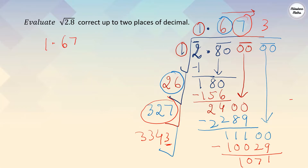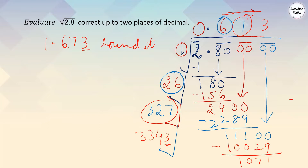We have got 1.673. When asked for the answer correct to two decimal places, you find one extra place. Here the third decimal digit is 3, which is less than 5, so we round down. The answer remains 1.67. Therefore the square root of 2.8 correct to two decimal places is 1.67.